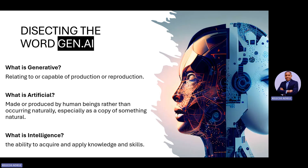Then the third component is intelligence — the ability to acquire and apply knowledge and skills. So it all makes sense now what the word generative AI is. You are looking at algorithms and models that have been created by humans that have the capacity to reproduce information. When you have trained them on a dataset over a period of time, they can use that training to start reproducing more information outside that scope of work. Generative AI models also have the ability to acquire knowledge from the dataset you have exposed them to.